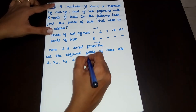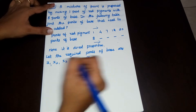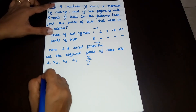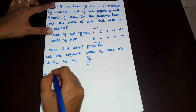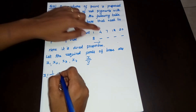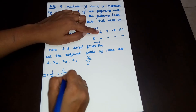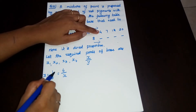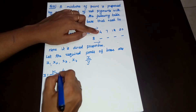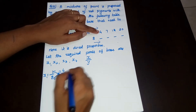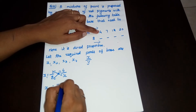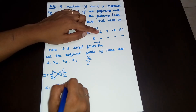So, this is a direct proportion. x1 is equal to x is equal to 32.